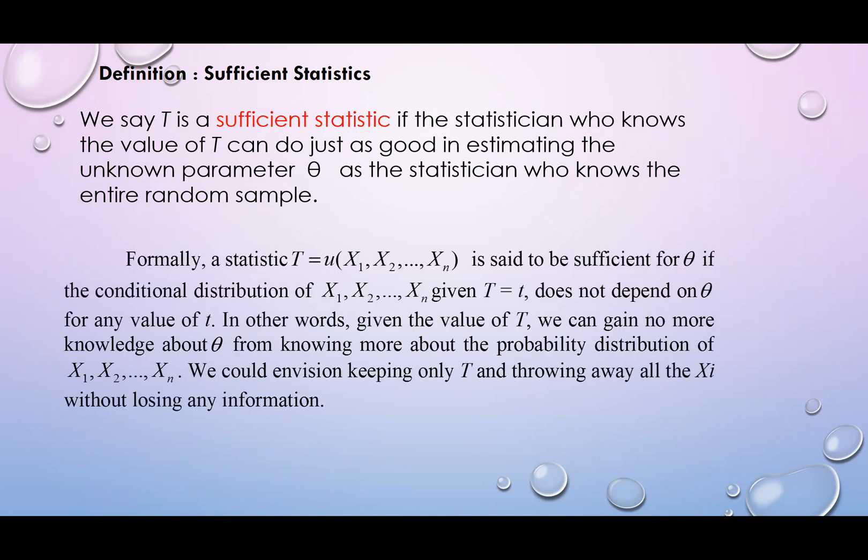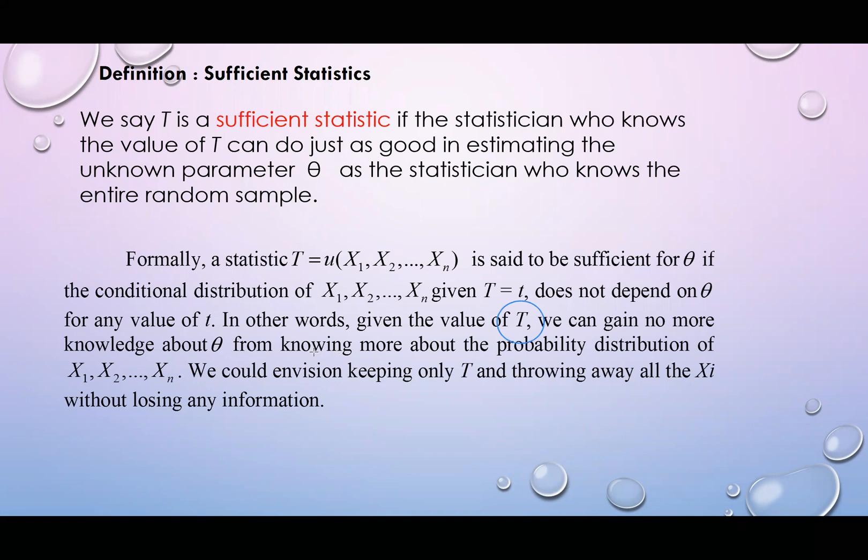Formally, a statistic T is said to be sufficient for theta if the conditional distribution of X1, X2, Xn given T does not depend on theta for any value of T. In other words, given the value of T, we can gain no more knowledge about theta from knowing more about the probability distribution of X1, X2, Xn. We could be keeping only T and throwing all the Xi without losing any information.